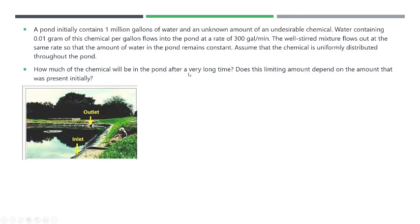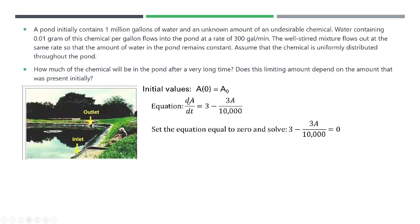And then question two says, how much of the chemical will be in the pond after a very long time? Does this limiting amount depend on the amount that was present initially? You can actually get this without solving the differential equation if you just find the critical values. And remember that for a derivative, you find critical values by setting the derivative equal to 0. So if I set the derivative equal to 0, that's going to give me my maximums and my minimums, or where it's increasing, where it's decreasing.